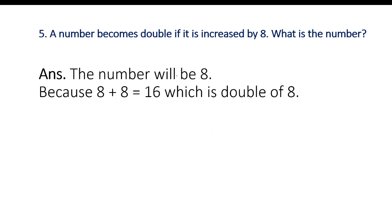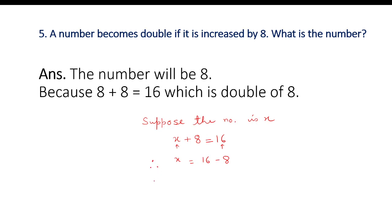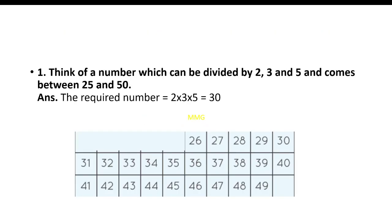Moving to the next page. The question is: a number becomes double if it is increased by 8 — what is the number? Suppose the number is x. So x plus 8 equals 2x, which means when you double the number you get 16. So x equals 16 minus 8, which equals 8. The answer is 8, because 8 plus 8 equals 16, which is double of 8.